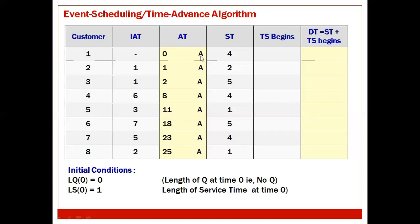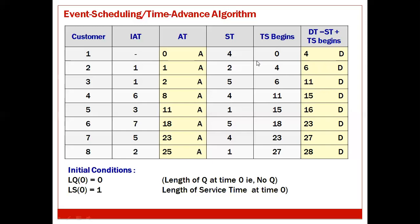All those values are the arrival time clocks, indicated with 'A' for arrival. Next we will see time service begins (TS begins) and then departure time, which is when time service ends. For the first customer, TS begins at 0. Departure time — that is TS ends — is nothing but service time plus TS begins. So 4 plus 0 equals 4.